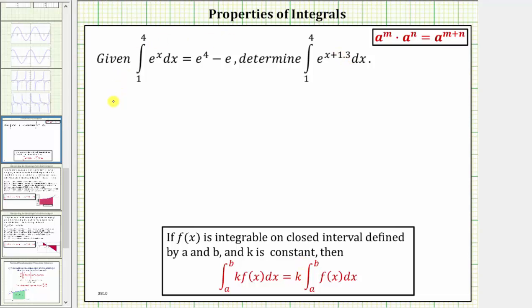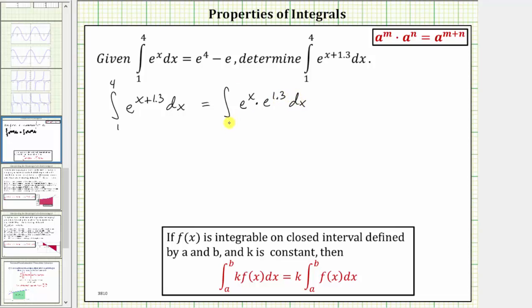Our goal is to determine the integral of e raised to the power of x plus 1.3, integrated from one to four. The first step will be to write the integrand function as a product using the exponent property shown here from right to left. If we have a raised to the power of m plus n, this is equal to a raised to the power of m times a raised to the power of n, which means this integral is equal to the integral of e raised to the power of x times e raised to the power of 1.3, integrated from one to four.